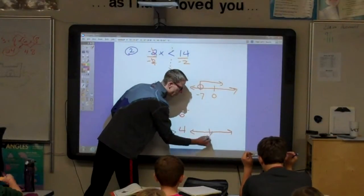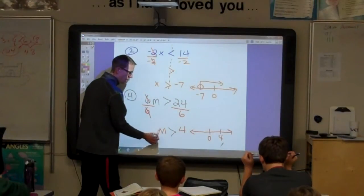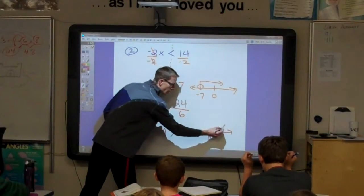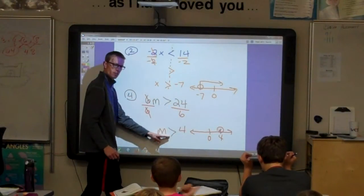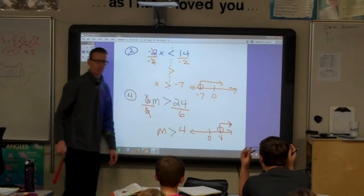Draw a number line. Mark 0. Mark 4. The m is written first. Use an open dot because of this sign. And shade to the right.